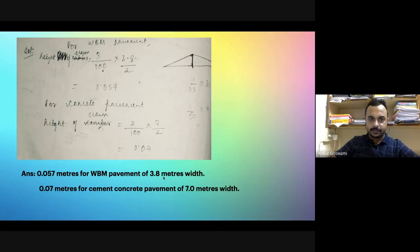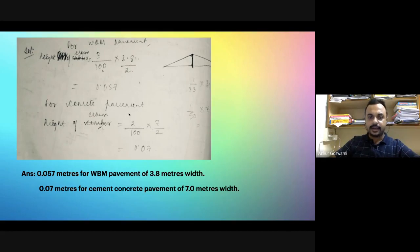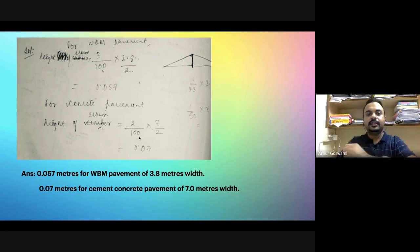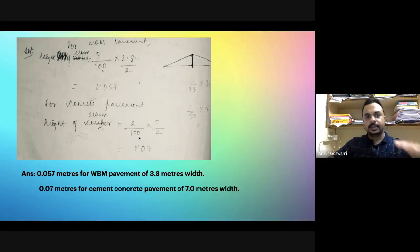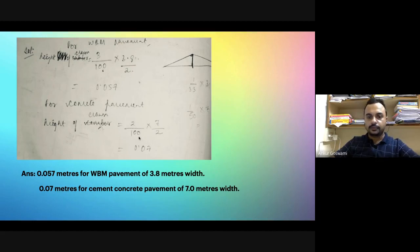That answer is for three point eight meters with WBM pavement providing a camber of three percent. For seven meters with cement concrete pavement, the camber provided is two percent and the answer is zero point zero seven meters. Three percent means more slope — in WBM pavement the water drains more slowly, so more slope is given. In concrete pavement water moves easily, so less slope is sufficient.